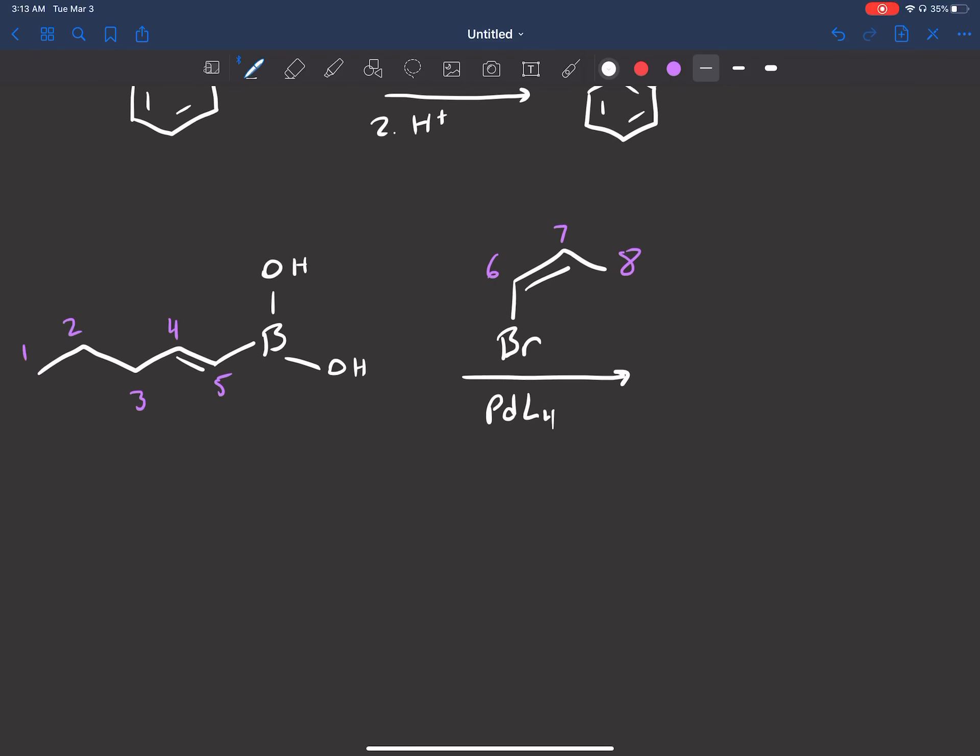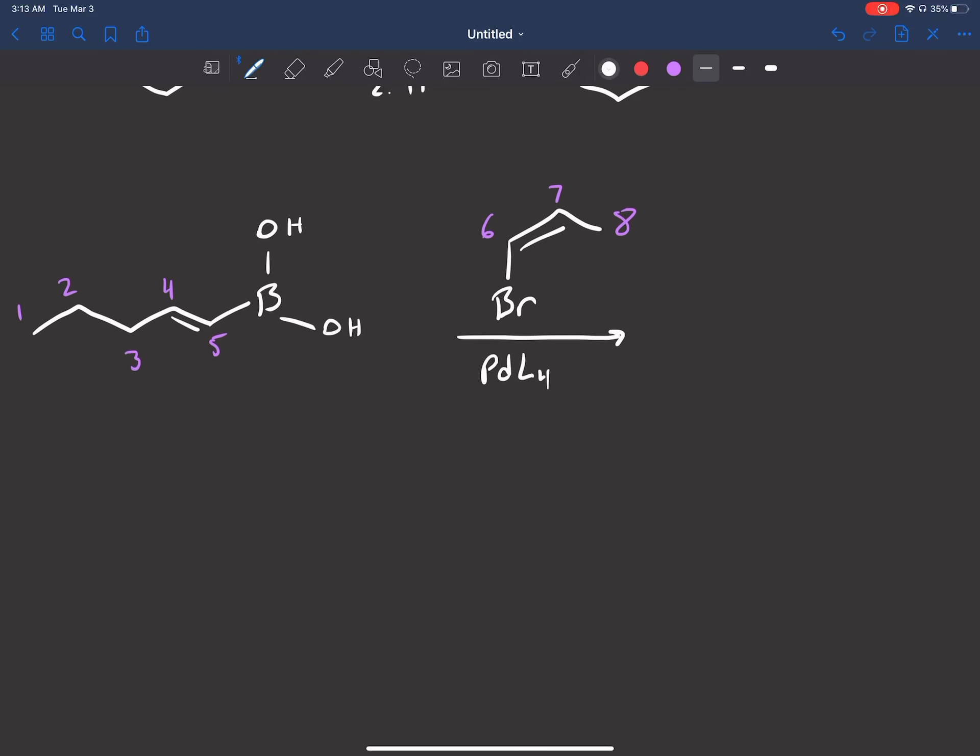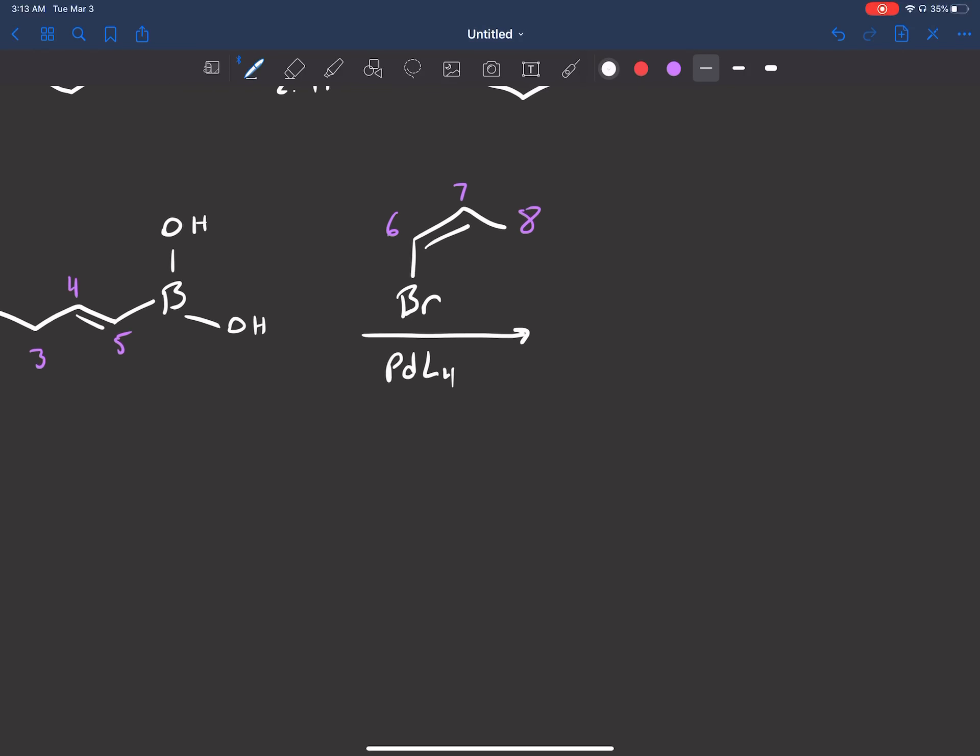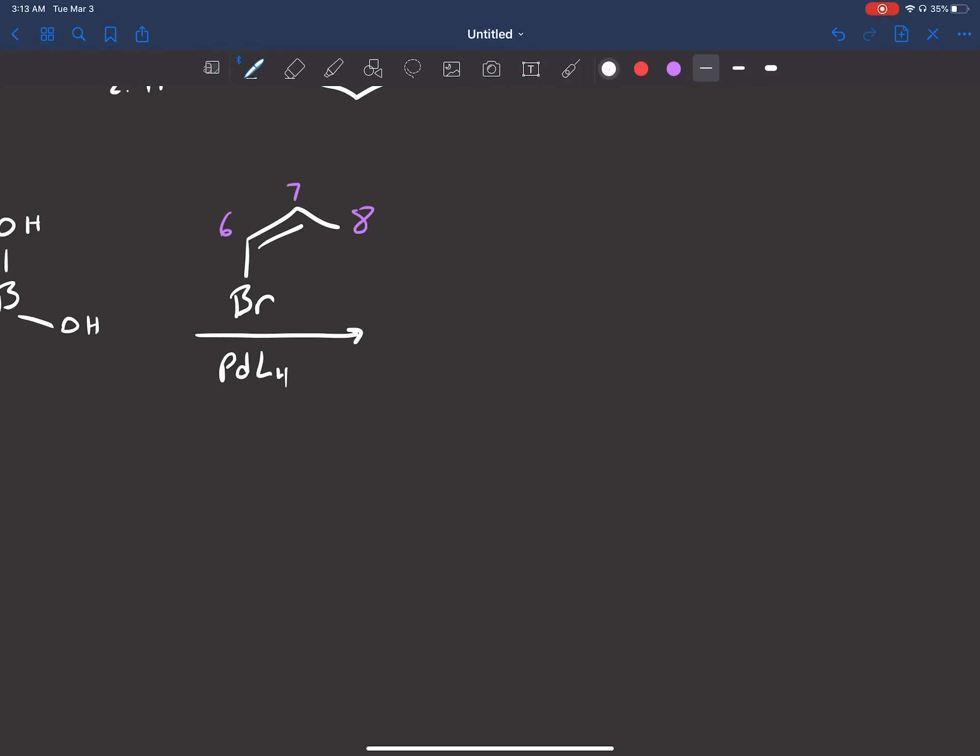Now, the Suzuki reaction always retains your stereochemistry. So what I find easiest to do is draw one of those chains exactly how you already have it. So on the left, I'm going to just draw the 5-carbon chain.